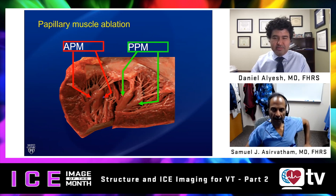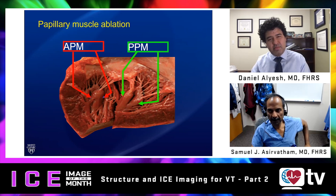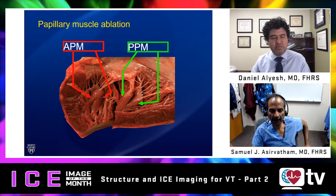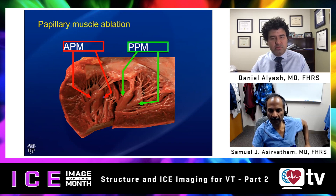In our part one, we looked at some critical structures in the outflow tract — the anteroposterior relationships, the coronary vessels, the appendage, and the pulmonary trunk. Now focusing on some other key areas where VT ablation is not only facilitated, but sometimes really only possible when we have real-time visualization of our catheter and the critical structures.